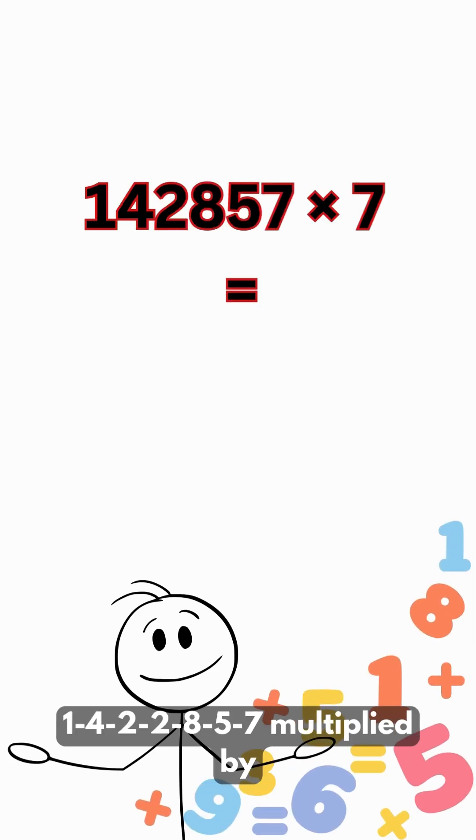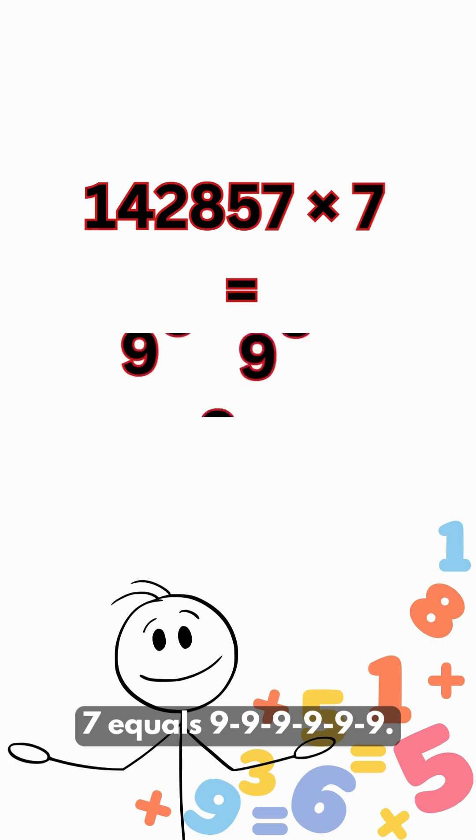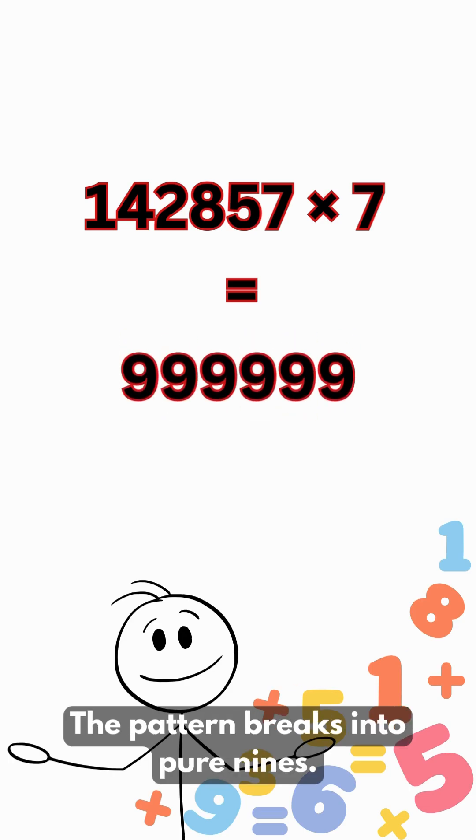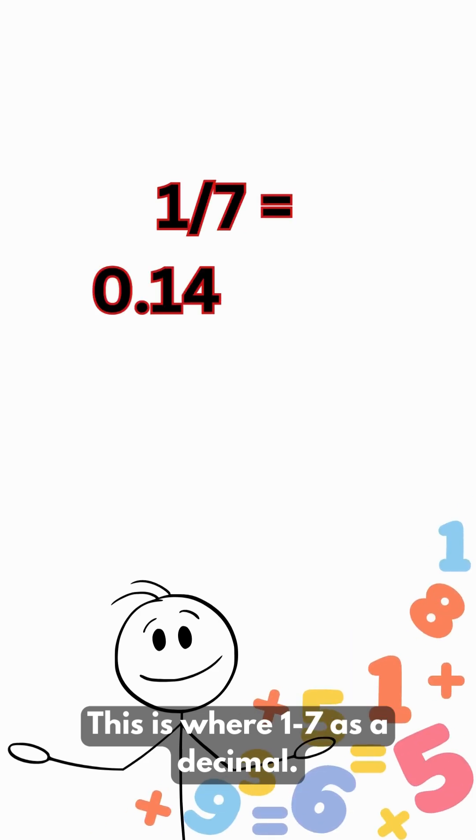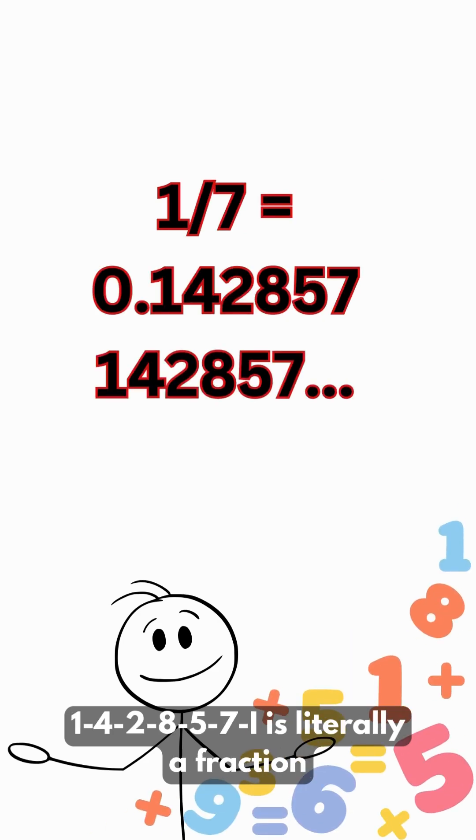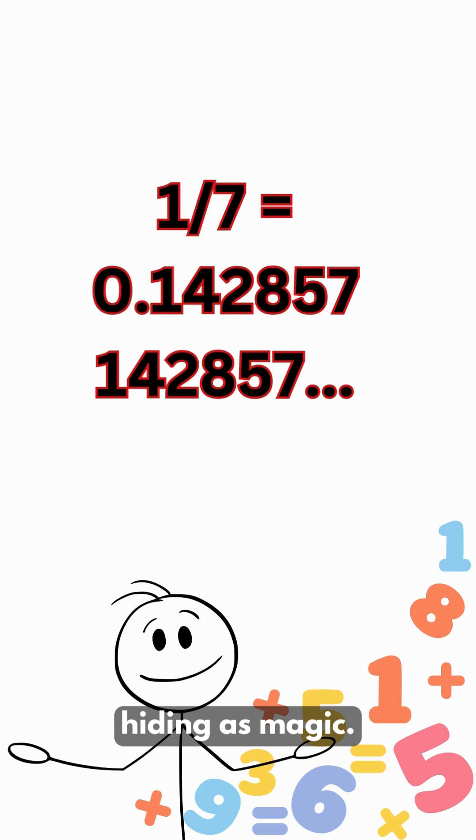142857 multiplied by 7 equals 999,999. The pattern breaks into pure nines. This is 1/7 as a decimal. 142857 is literally a fraction hiding as magic.